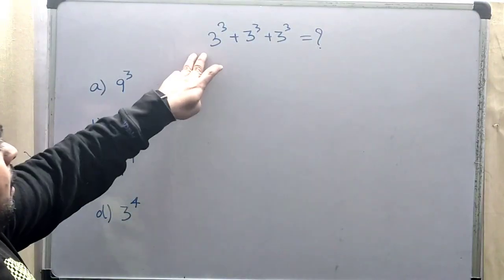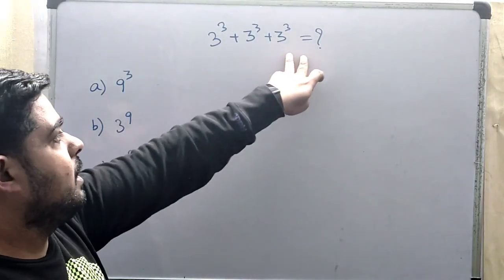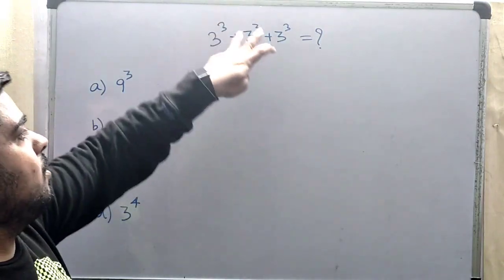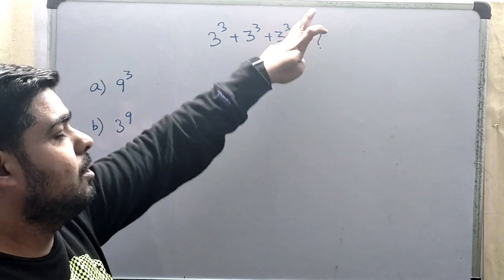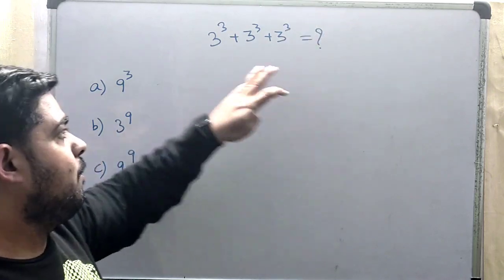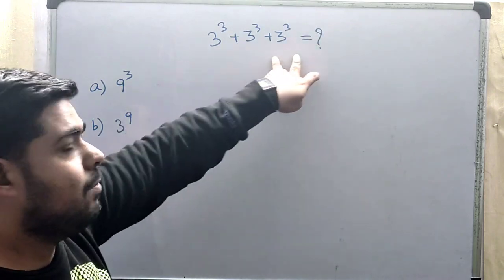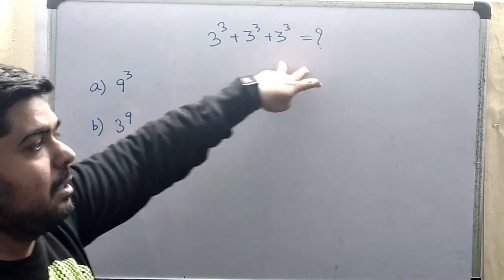Guys, this is our equation: 3 to the power 3 plus 3 to the power 3 plus 3 to the power 3. We have to find the value of this equation.